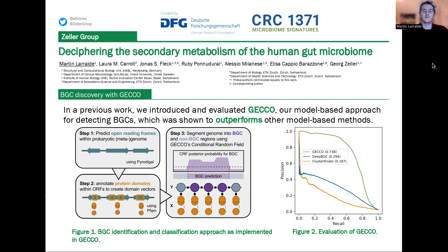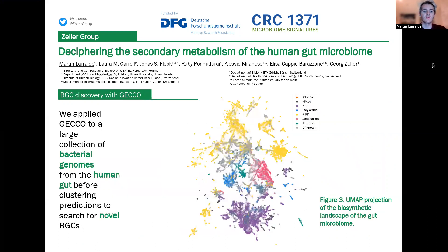After building a highly performant method for BGC detection, we applied this method to a large collection of bacterial genomes from the human gut, before clustering predictions at the nucleotide level to search for novel BGCs. We assembled a collection of over 300,000 genomes, either coming from isolated genomes from the Progenomes 2 database or from metagenome-assembled genomes from the Unified Human Gastrointestinal Gut Catalog by Alexander-Armeda.